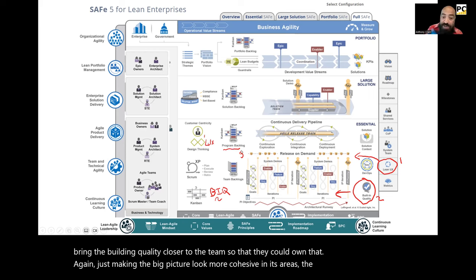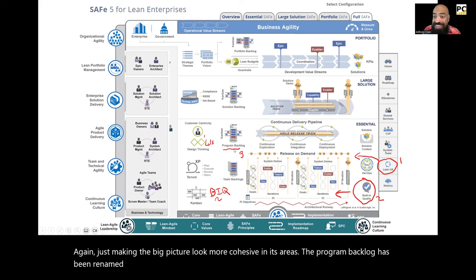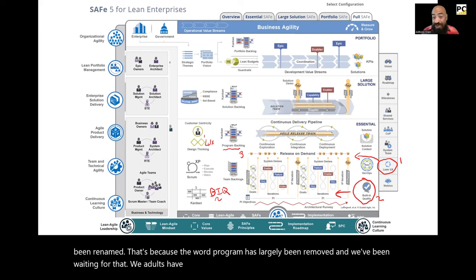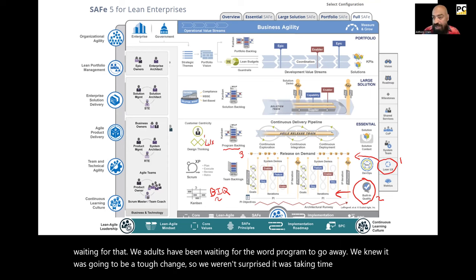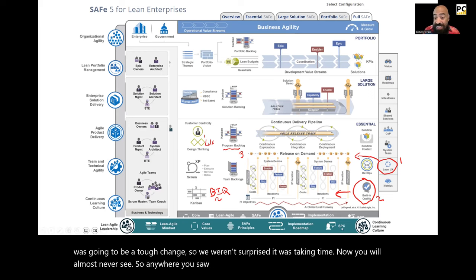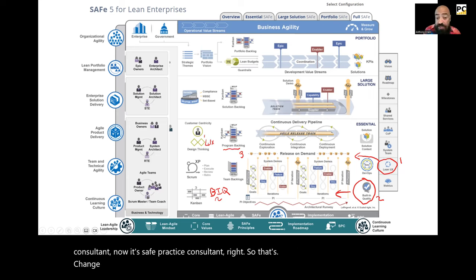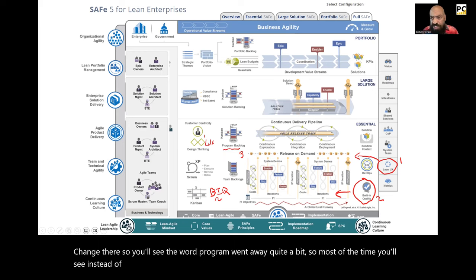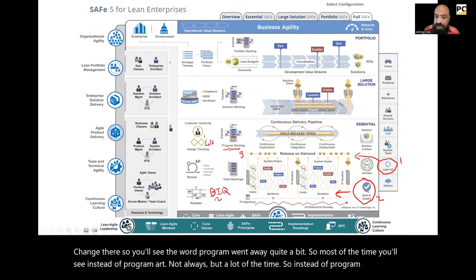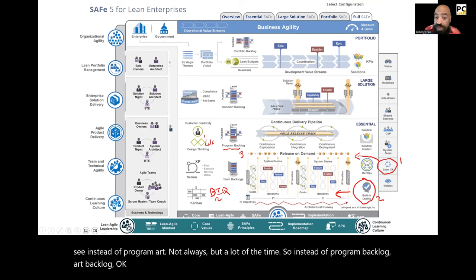The program backlog has been renamed because the word 'program' has largely been removed. We Agilists have been waiting for that word to go away. So now you'll almost never see it — SPC used to stand for 'SAFe Program Consultant,' now it's 'Practice Consultant.' So instead of 'program backlog,' you'll see 'ART backlog' — the Agile Release Train's feature backlog.